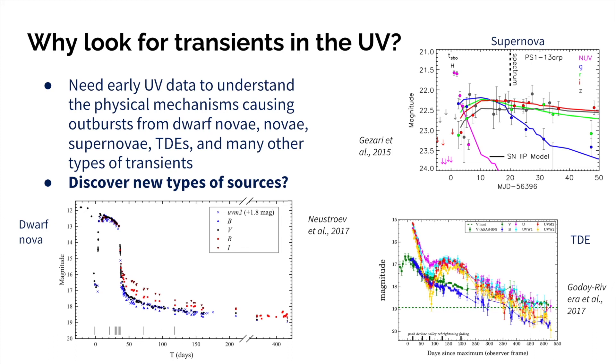This is kind of a shame, because it turns out that the UV data is actually really important, especially at early times, to understand the physical mechanism causing lots of these transient phenomena, from supernovae, tidal disruption events, and dwarf novae. But additionally, because we haven't looked for transients in the UV really, we could discover completely new kinds of sources. We don't really know what's out there.